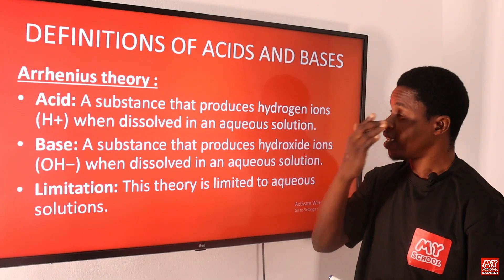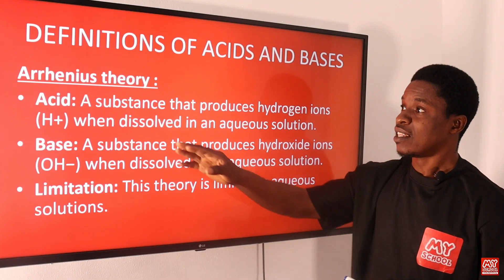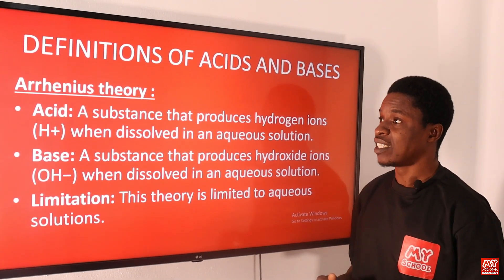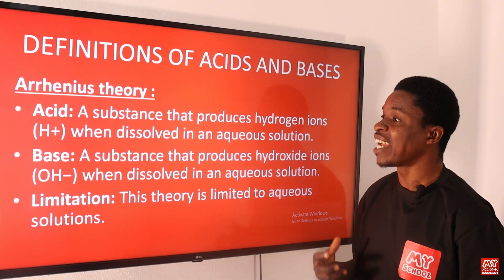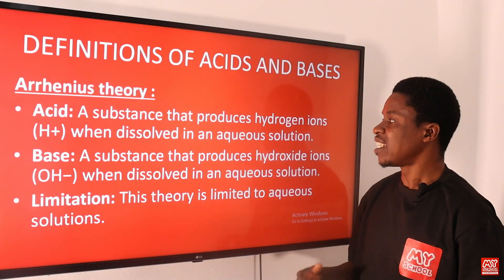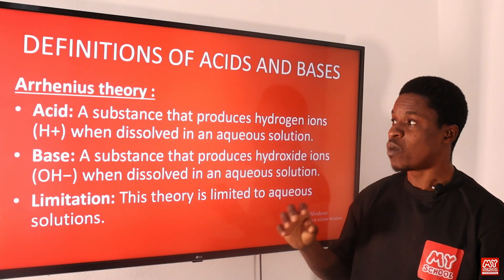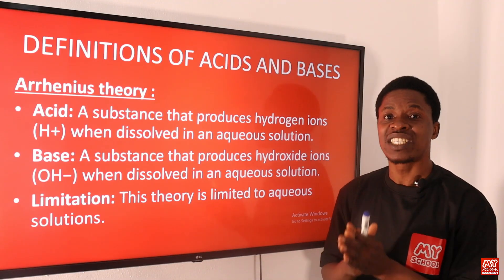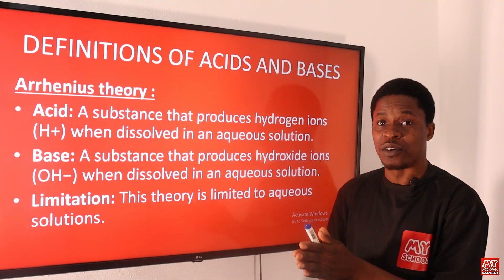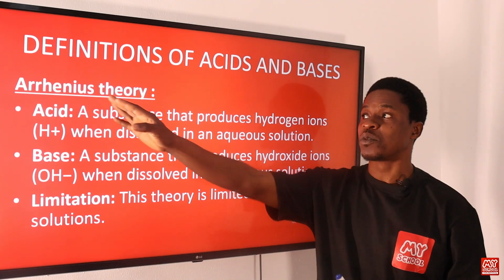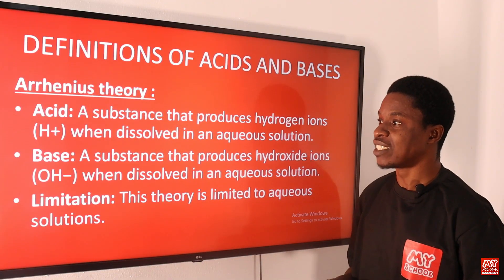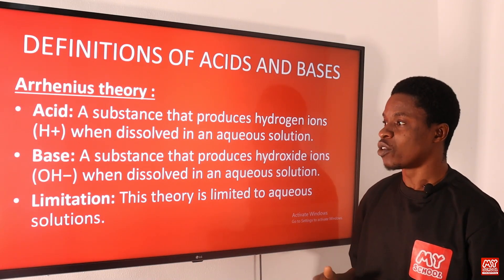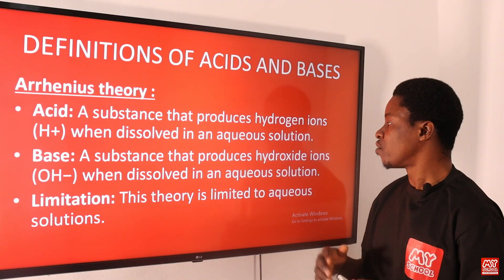Different definitions have been given by different scientists or chemists. The first person we'll be looking at is Arrhenius. The Arrhenius theory defines an acid as a substance that produces hydrogen ions when dissolved in an aqueous solution like water. So when you dissolve a substance in water or an aqueous solution and it produces hydrogen ion as its positive ion, we call that substance an acid. He also said a base is a substance that produces hydroxide ions (OH⁻) when dissolved in an aqueous solution.